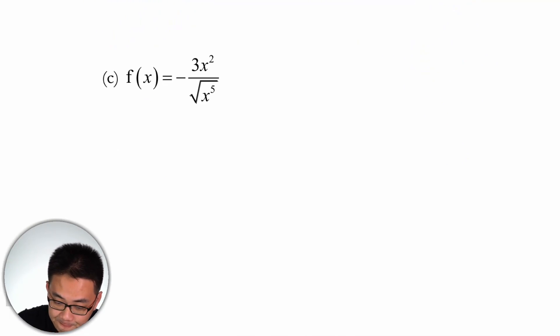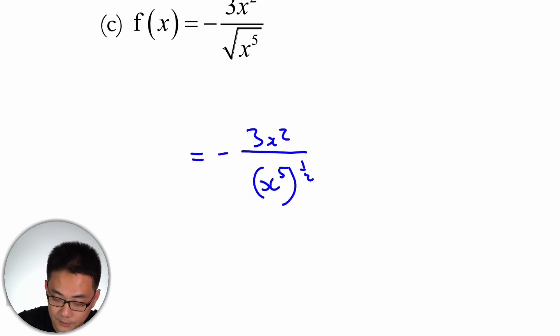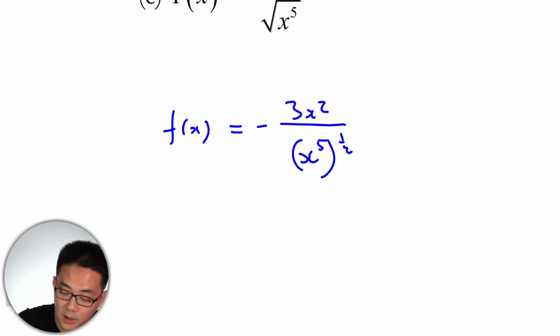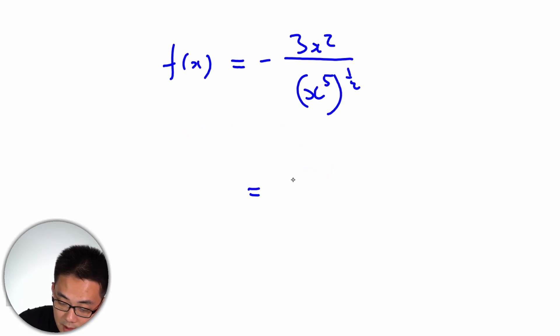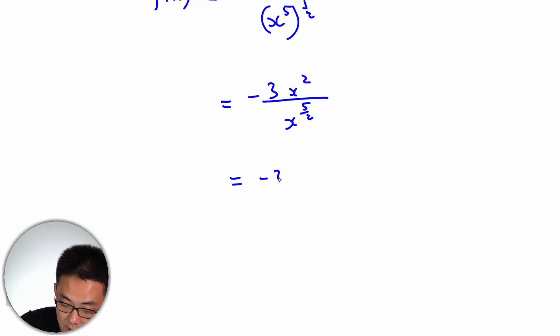Let's look at the last part. We have f(x) equals to minus 3 over x squared. So this would be minus 3 over x squared. The one below, we're just going to change it to index notation form. So this is x to the 5, power of half. So this is f(x). This case here, what we're going to do is minus 3, x squared is x to the 5 over 2. And what we're going to do next is minus 3, x to the 2 minus 5 over 2.